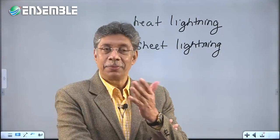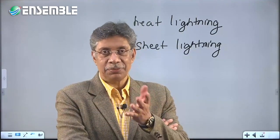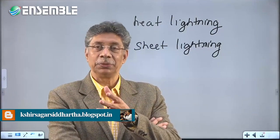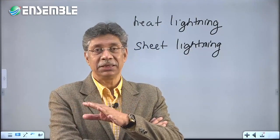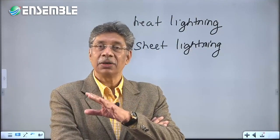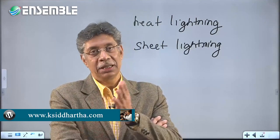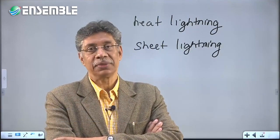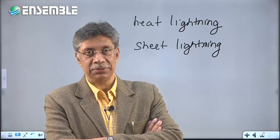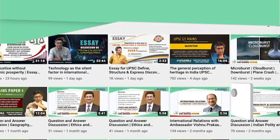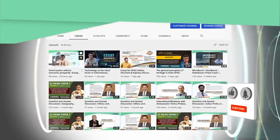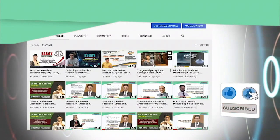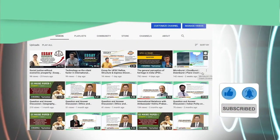Lightning is a problem as well — it can be an unmitigated disaster and a good number of people die from it. This goes on to become part of disaster management. To have more such discussions and analysis, subscribe to our channel and hit the bell icon for notifications on upcoming videos.